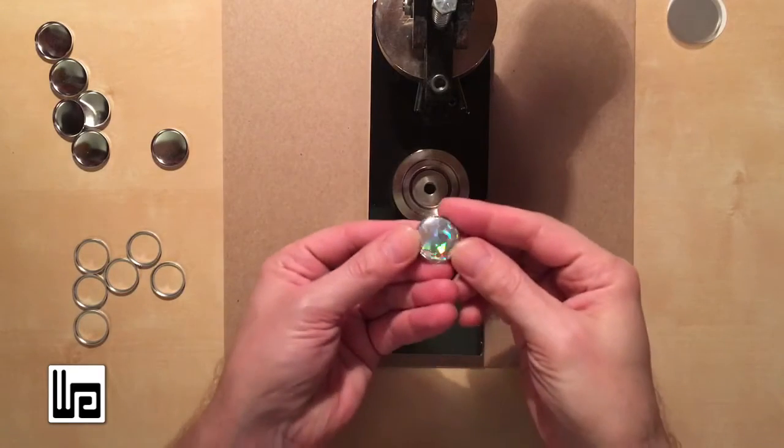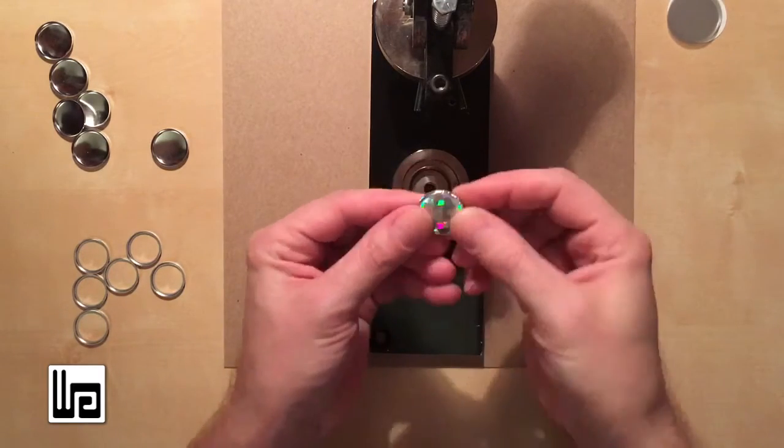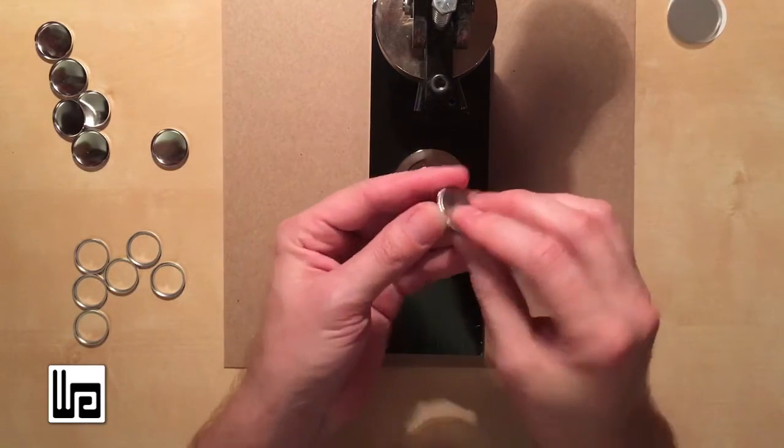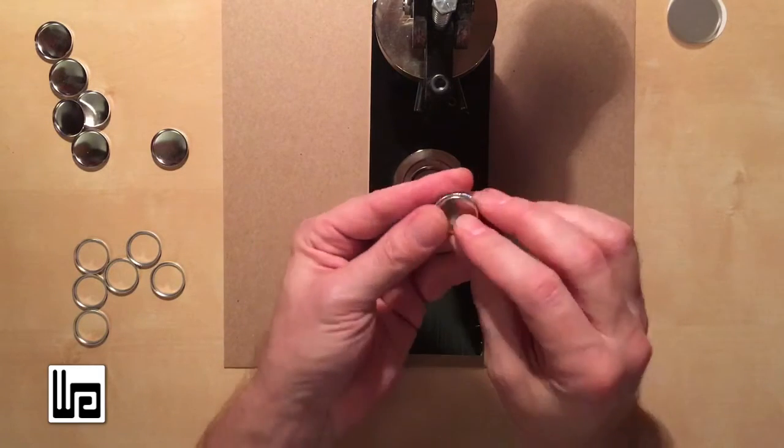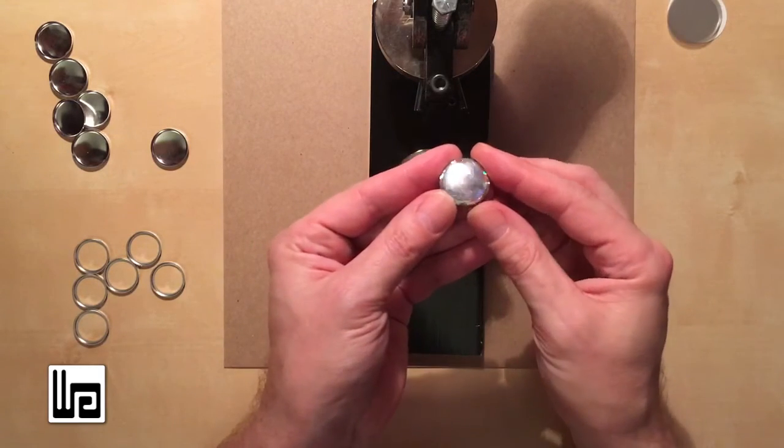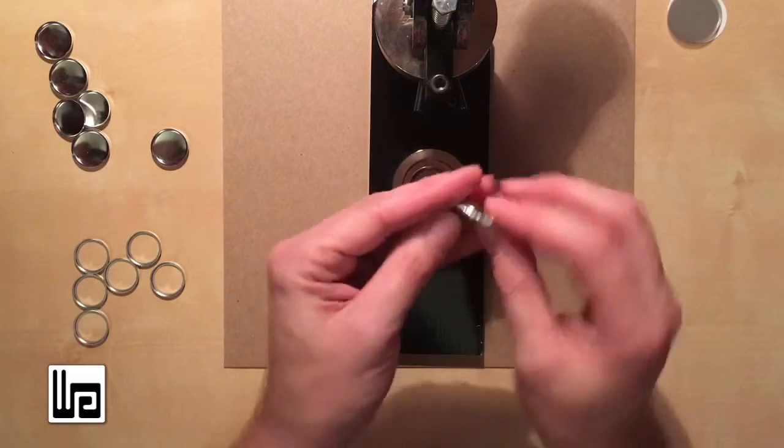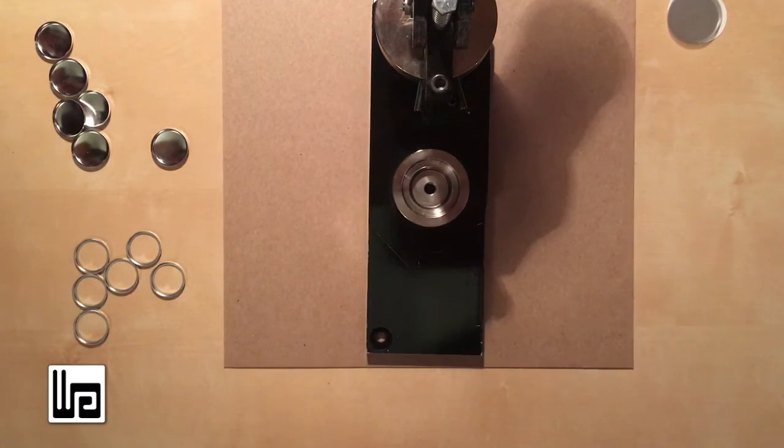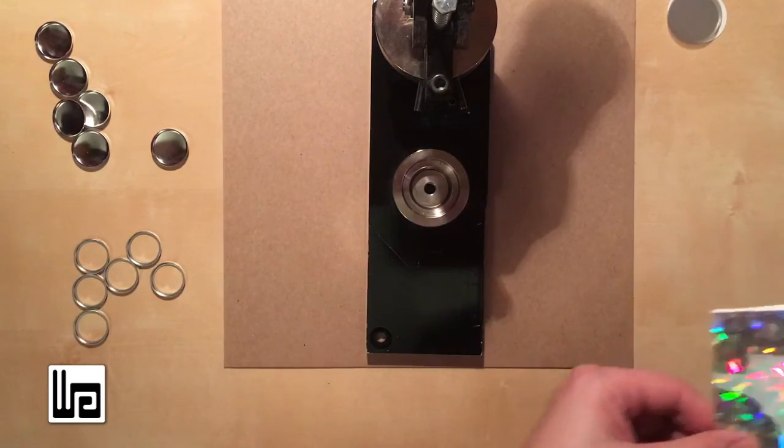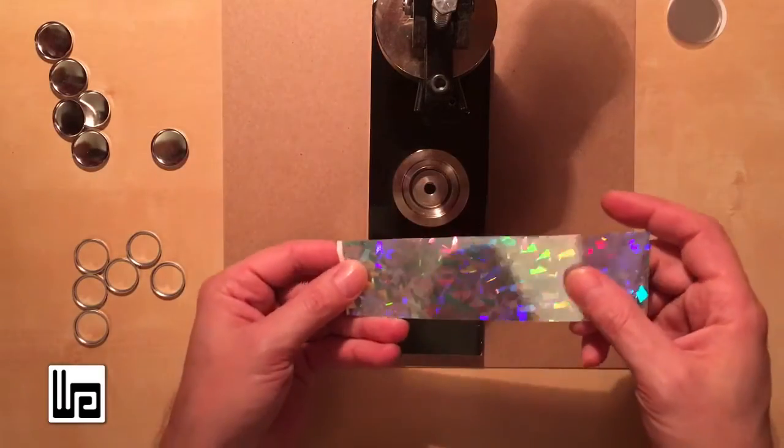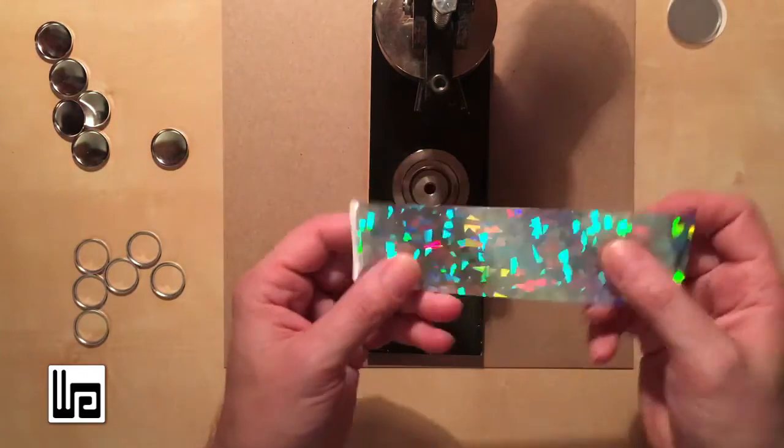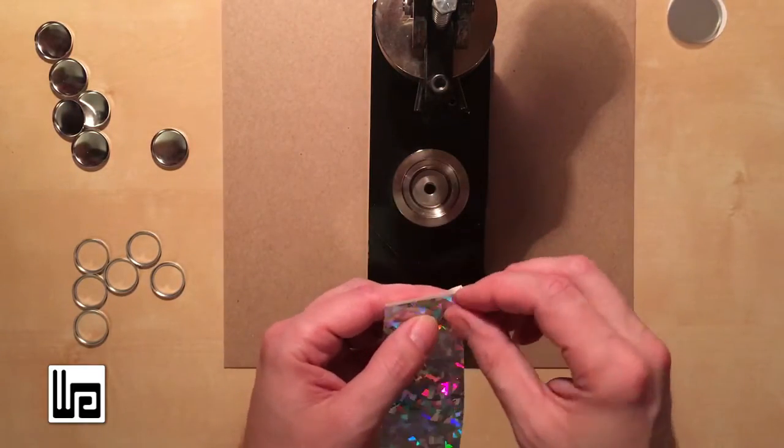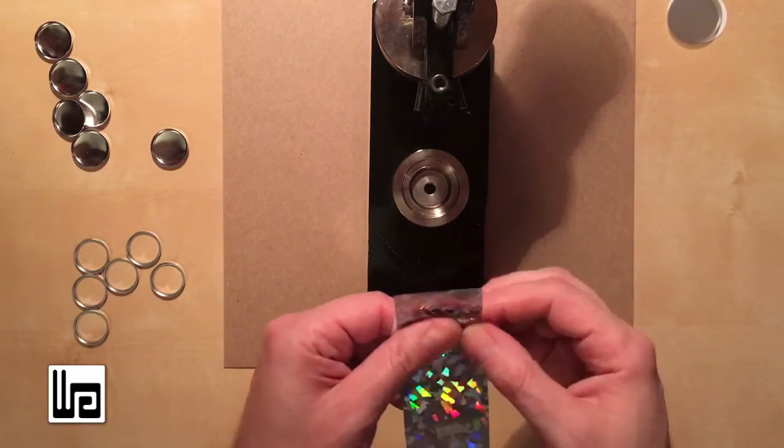Now I want to show how to make a button out of holographic sign vinyl, which I just love. There's different kinds. My favorite is called Crystal. And I'll put a link in the info area on where to get it. So it's a sticker, which means you can't just stick it to the button shell because it will get all squinched up in there.